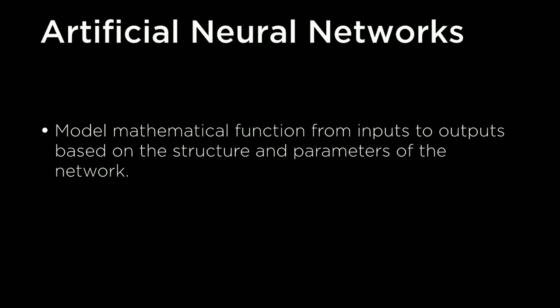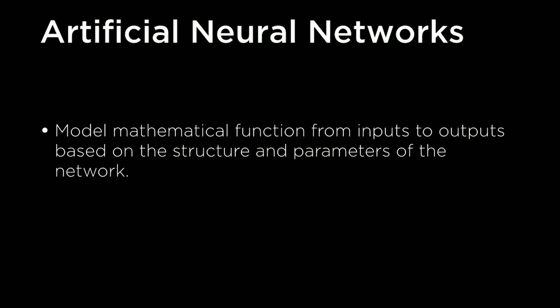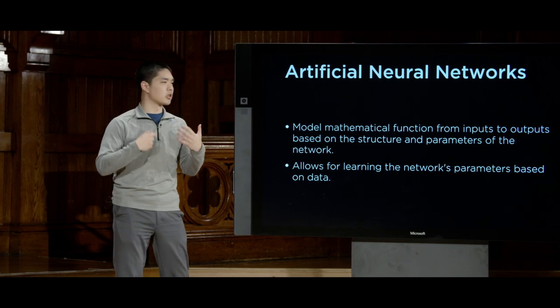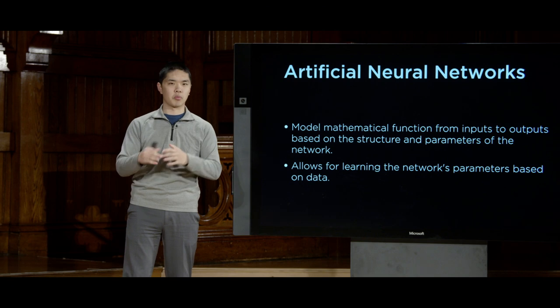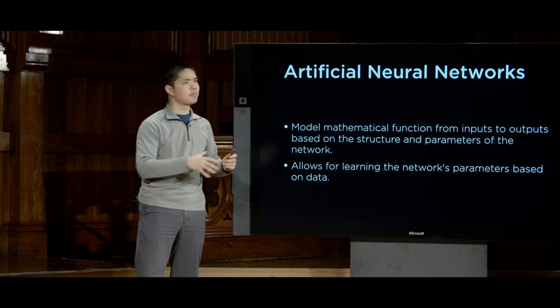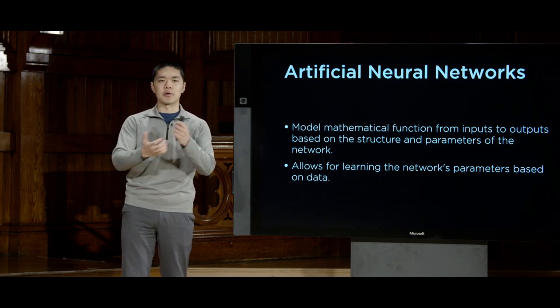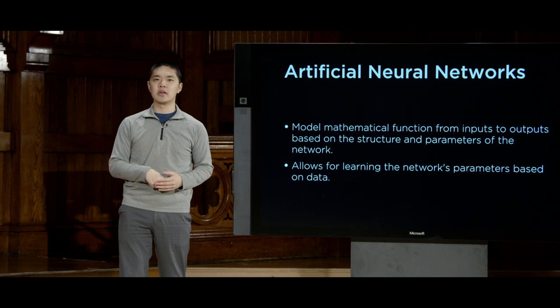Artificial neural networks allow us to model some sort of mathematical function. Every neural network is really just a mathematical function mapping certain inputs to particular outputs based on the structure of the network. In particular, artificial neural networks lend themselves to a way that we can learn what the network's parameters should be — writing code that allows the network to figure out how to model the right mathematical function given a particular set of input data.